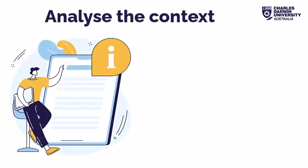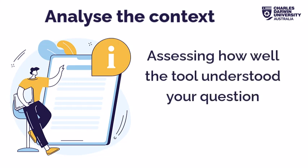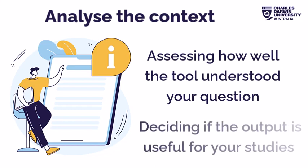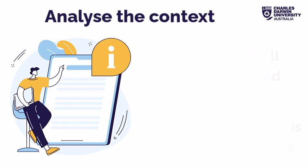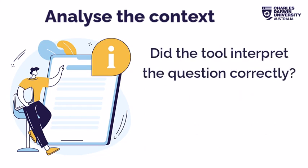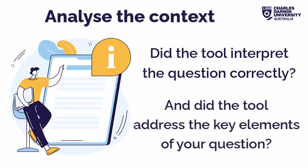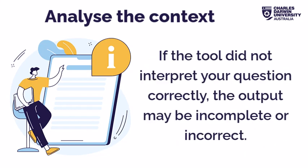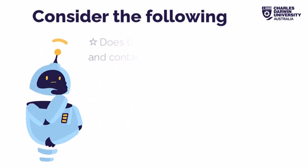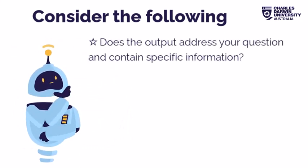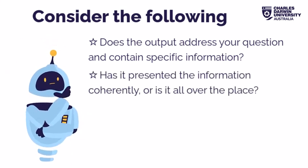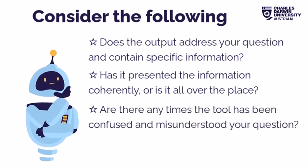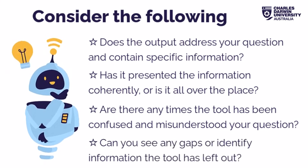Analysing the context is an important step in critically evaluating the output generated by Gen AI. It means assessing how well the Gen AI tool understood your question and deciding if the resulting output is useful for your studies. When reviewing the Gen AI output, you need to determine if the tool correctly interpreted the intended meaning and addressed the key elements of your question. If the tool didn't fully grasp the context or missed important elements, its response might be incorrect or incomplete. Ask yourself: does the output address your question? Has it presented the information coherently? Are there any gaps or information the tool has left out?